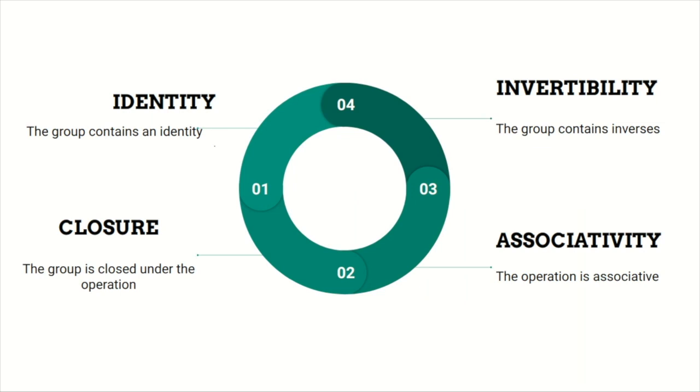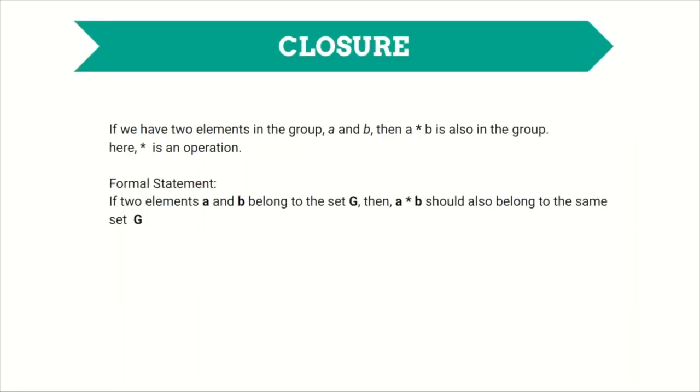A group has the following properties: the group contains an identity, the group contains inverses, the operation is associative, and the group is closed under the operation. Let's have a look at each of these briefly. Number one: closure. If we have two elements in the group, a and b, it must be the case that a operation b is also in the group. This is what we mean by closed. Formal statement says if two elements a and b belong to the set G, then a operation b should also belong to the same set G.